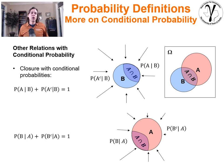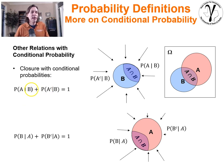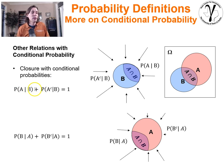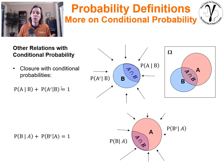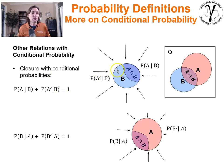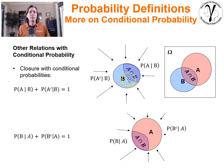There's closure even in conditionals. If we shrink our universe to B, then the probability of A given B plus the probability of A complement given B must also equal 1. These are universes shrunk with the conditional.